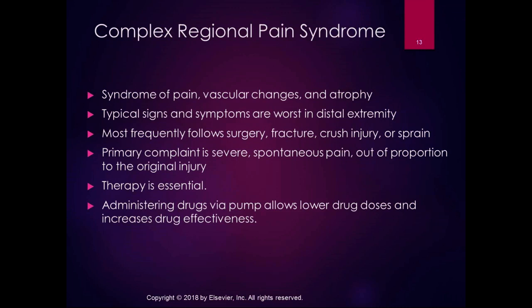In the early signs you get swelling and edema. There's a photograph in the book comparing two feet, and you can see the difference in color and the difference in edema between the two. Later on, the skin becomes more dry and cold, and the joints become stiff and swollen. If it's allowed to progress to a later stage, you can actually get irreversible muscle atrophy, osteoporosis, and arthritic changes.